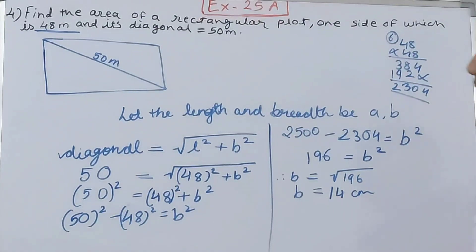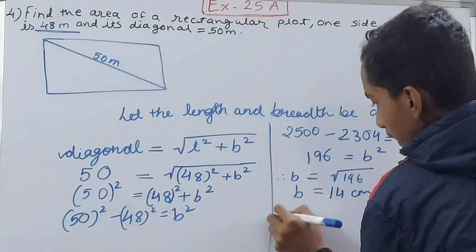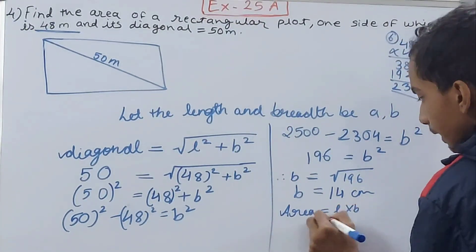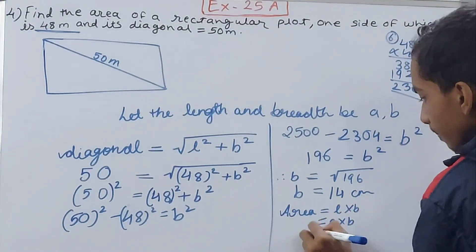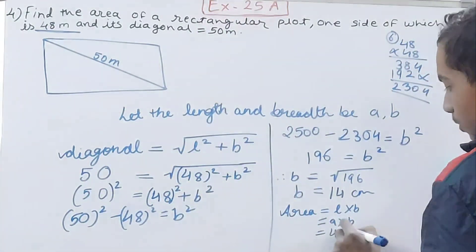What is asked is the area of the rectangle, so do that also. Area is equal to length into breadth, that means a into b. That's 48, one side is 48, we don't need the diagonal anymore.